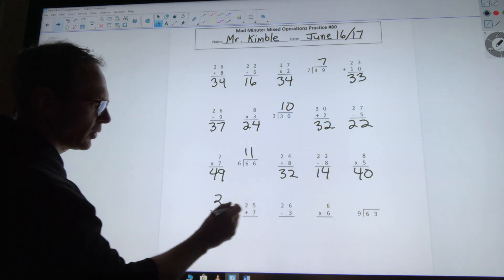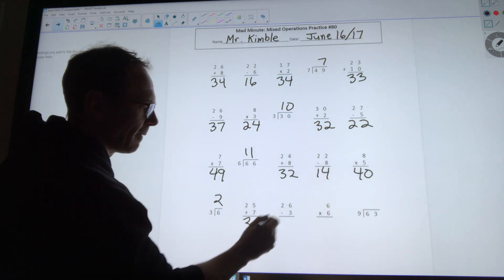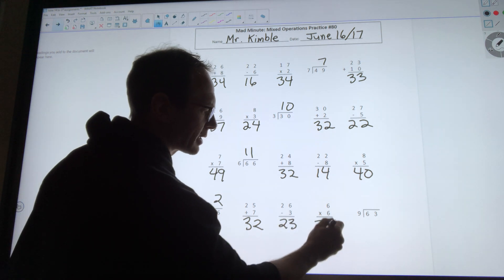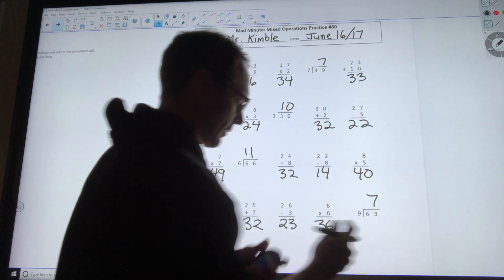6 divided by 3 is 2. 25 plus 7 is 32. 26 minus 3 is 23. 6 times 6 is 36. And 63 divided by 9 is 7. Stop.